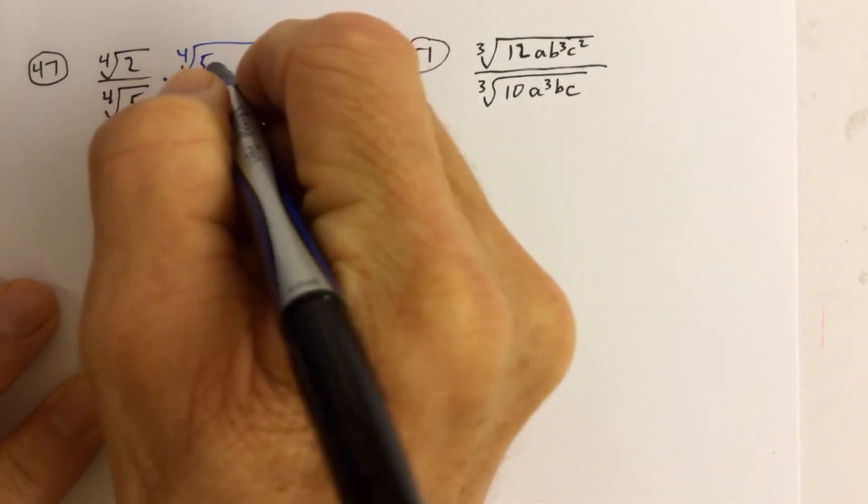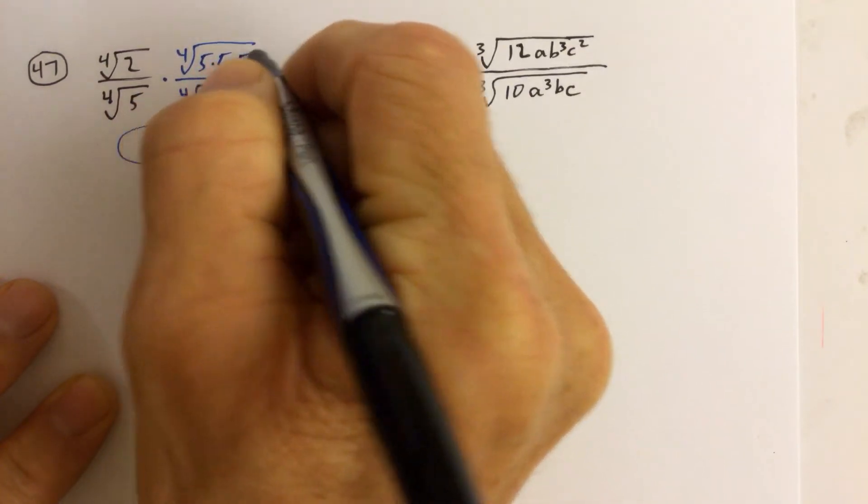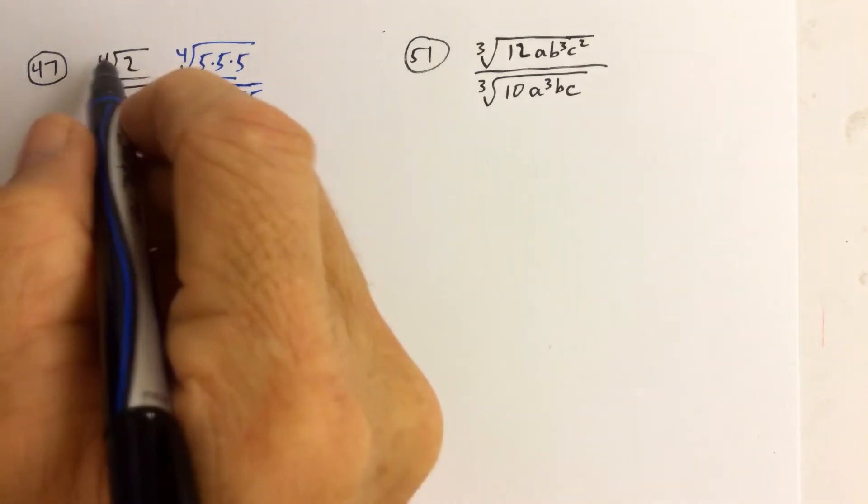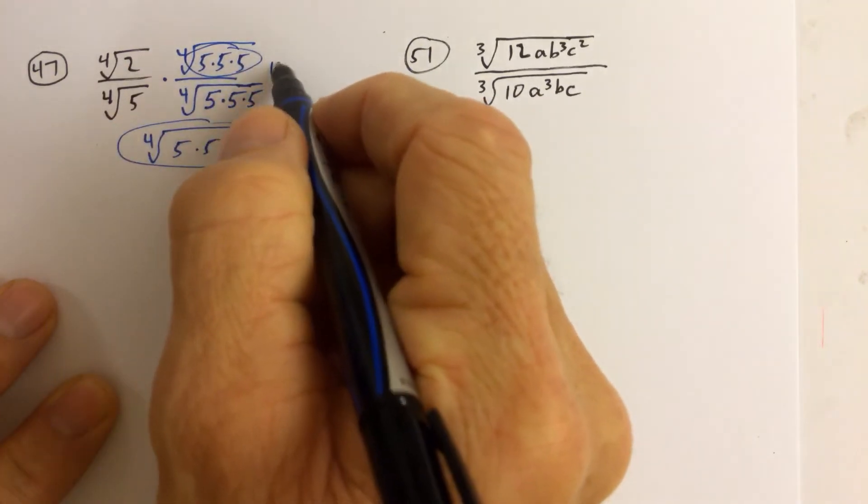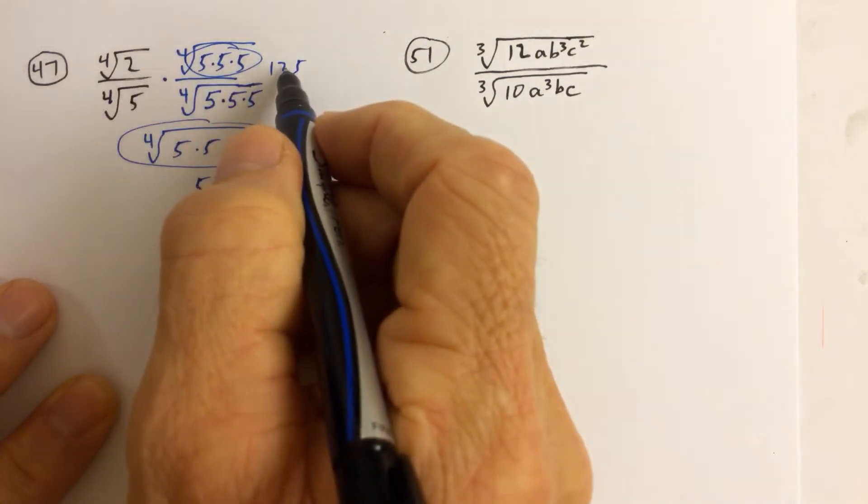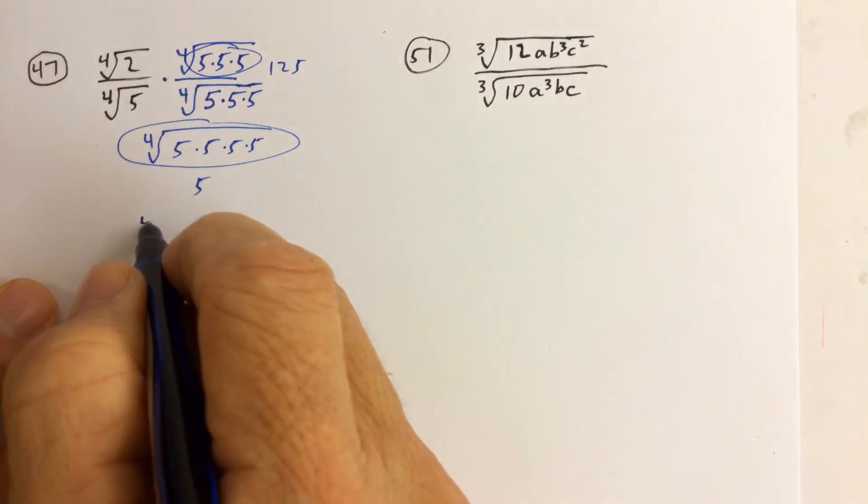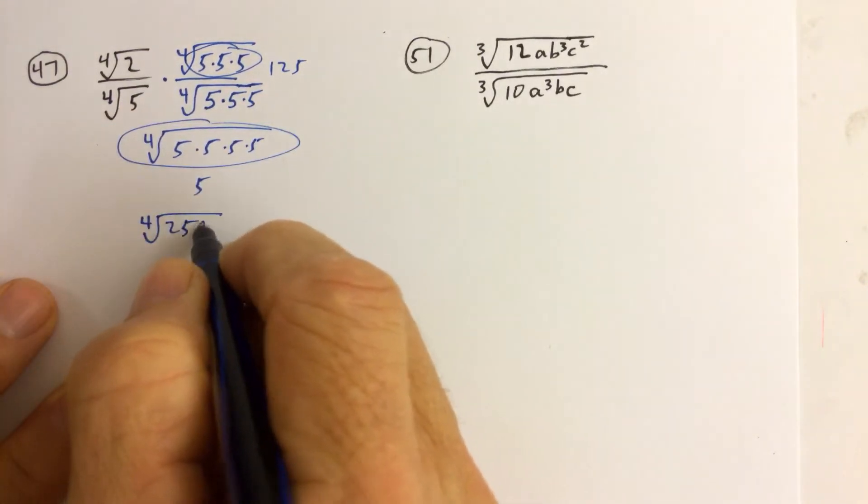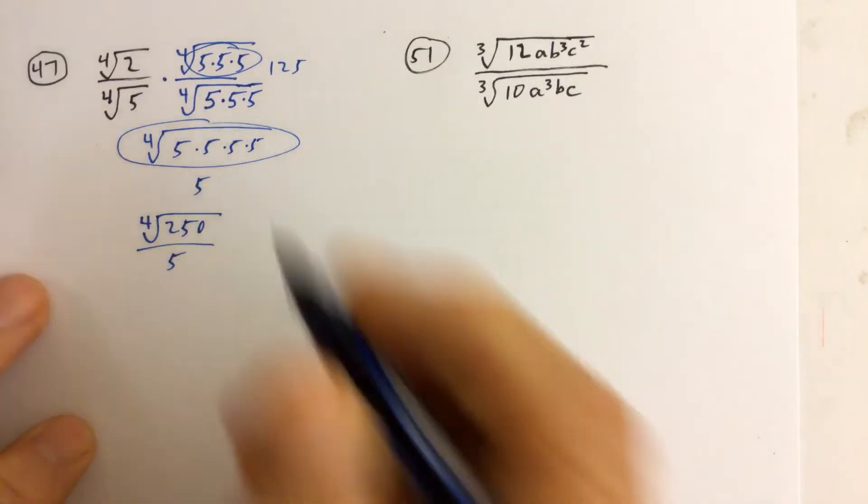Well, if I multiply the denominator by the 4th root of 5 times 5 times 5, I have to multiply the numerator by that as well. And the numerator, this whole thing here is 125, and when I multiply 125 times 2, I get the 4th root of 125 times 2 is 250, and then over 5 like we said.